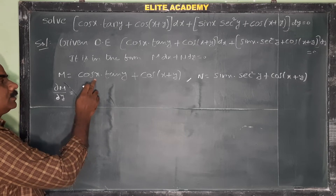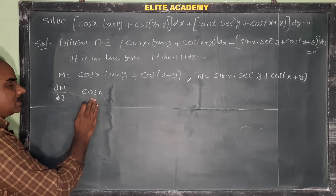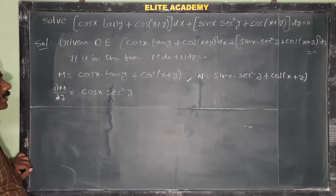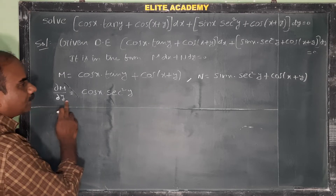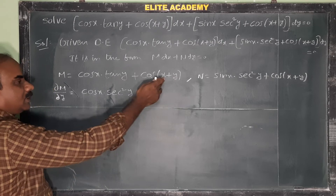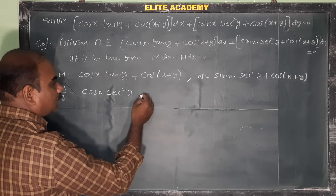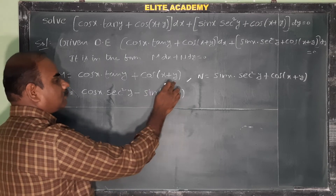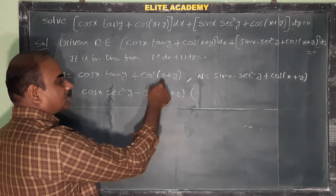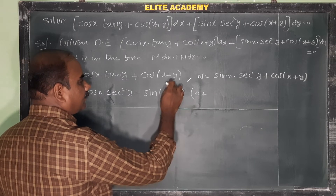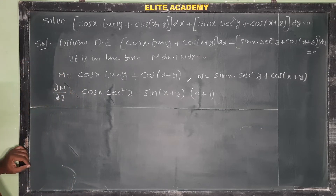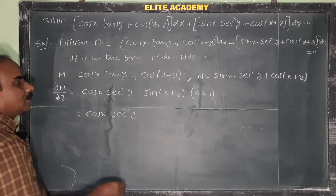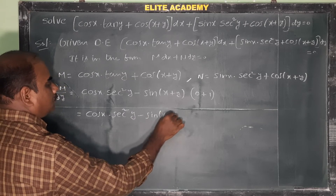For ∂M/∂y: in cos(x)·tan(y), cos(x) is constant, so differentiating tan(y) with respect to y gives sec²(y). Next, for cos(x+y), differentiating with respect to y — with x constant — gives minus sin(x+y), and the derivative of (x+y) with respect to y is 1. So ∂M/∂y = cos(x)·sec²(y) − sin(x+y).